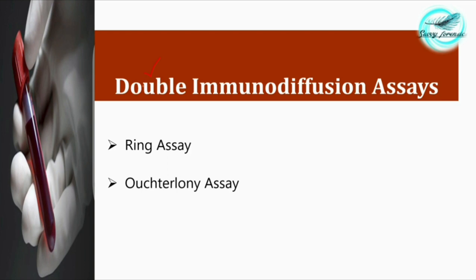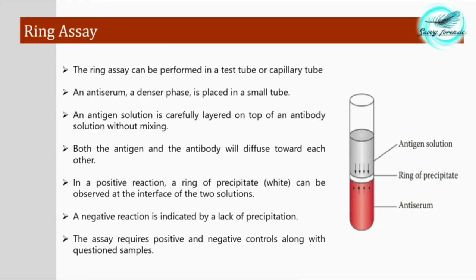The first process is the ring assay, while the second is the Ouchterlony assay. Both are very important and useful techniques for the species identification of blood. Let's discuss the first assay — the ring assay.